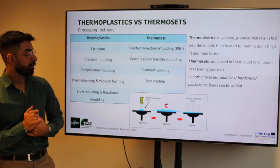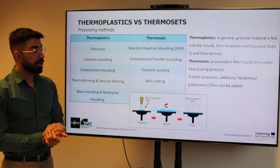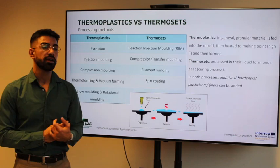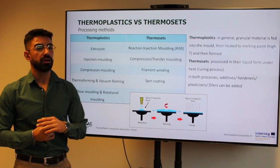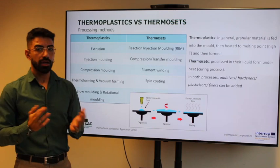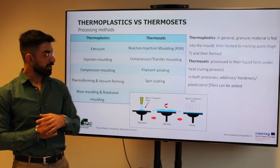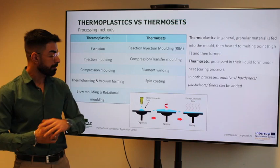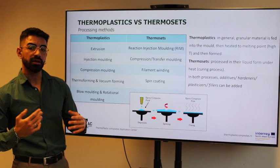Typical processing methods for thermoplastics are extrusion, injection molding, compression molding, thermoforming, vacuum forming, blow molding, and rotational molding. For thermosets, typical processing methods are RIM (reaction injection molding), compression and transfer molding, filament winding, and spin coating. In the spin coating process, a resin or epoxy is placed on a rotating substrate while drying and curing.